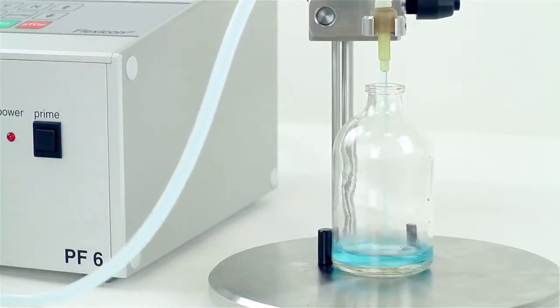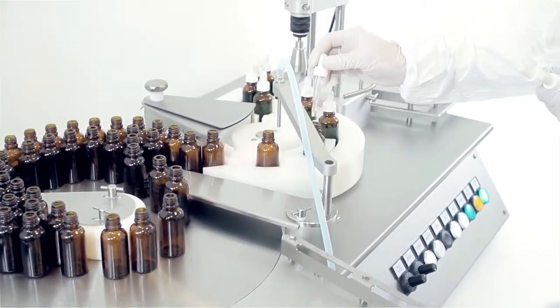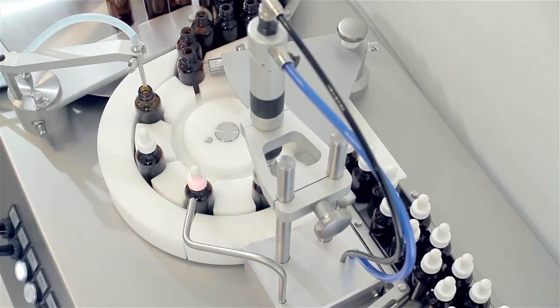The PF6 can be used as a standalone unit for manual filling or can be used with an automatic bottle handling system for larger batch production.